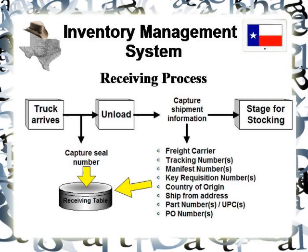At the time they're unloading the truck, there's a variety of information they would capture — basically who the freight carrier is, the tracking numbers, manifest numbers, key requisition numbers if associated with your purchasing process, country of origin which is now a customs requirement, ship-from address, part numbers, UPCs, and your purchase order numbers.